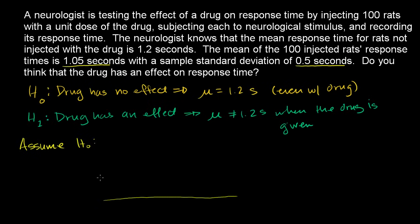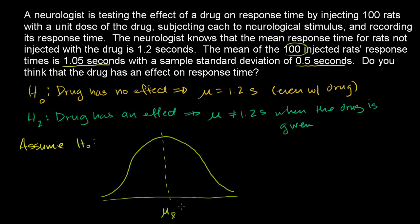The sampling distribution will be a normal distribution. We have 100 samples, which is a good number. It will have a mean, and if we assume the null hypothesis — that the drug has no effect — the mean of our sampling distribution will be the same as the mean of the population distribution, which would be 1.2 seconds. The standard deviation of our sampling distribution should equal the standard deviation of the population divided by the square root of our sample size, divided by the square root of 100.